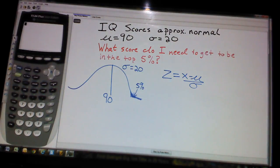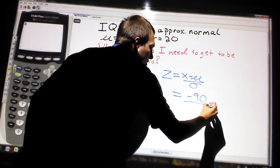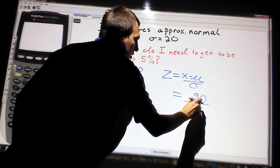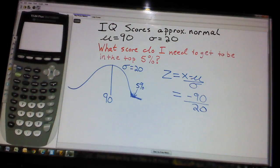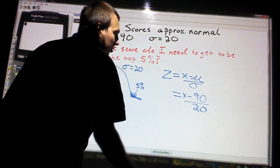Plug in the numbers you know. I know the mean is 90, and I know the standard deviation is 20. I have no idea what z is, I have no idea what x is. I am solving for x, that's what I'm solving for.